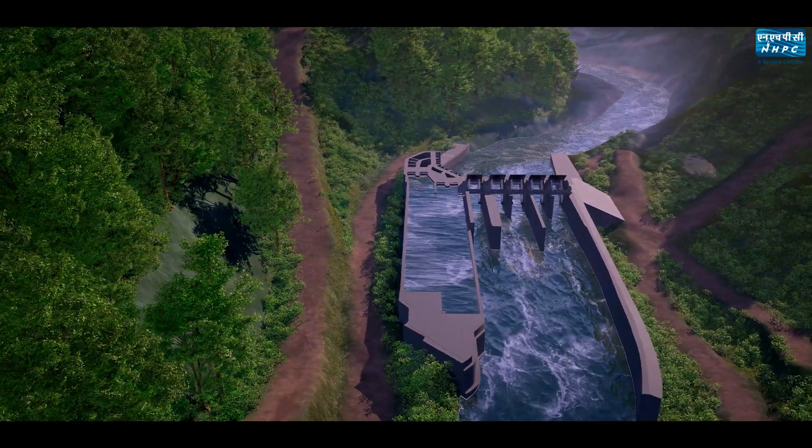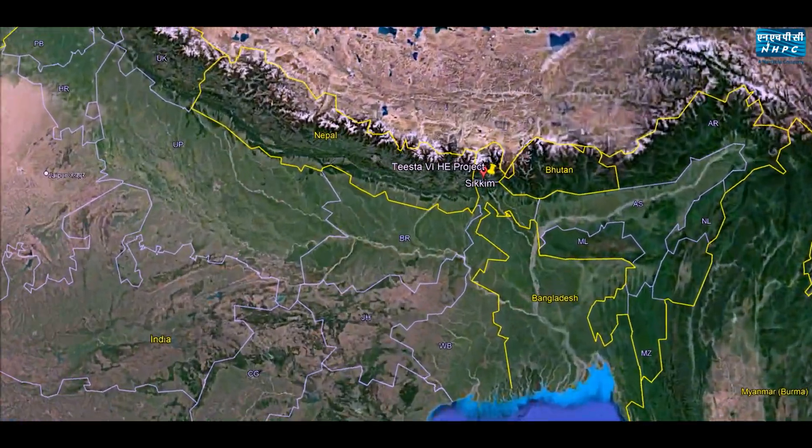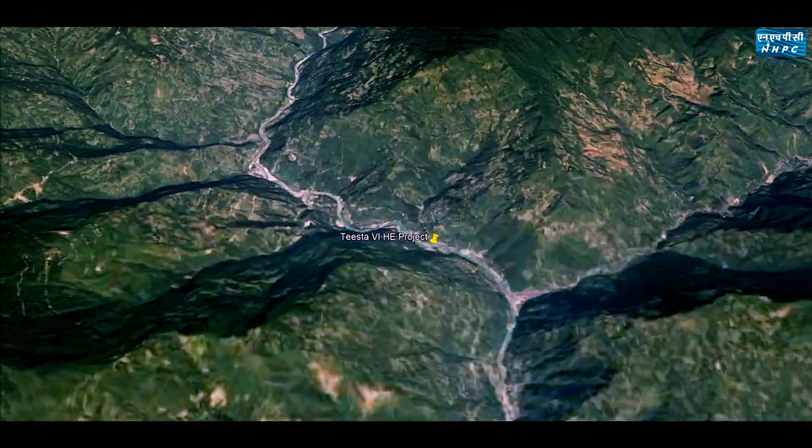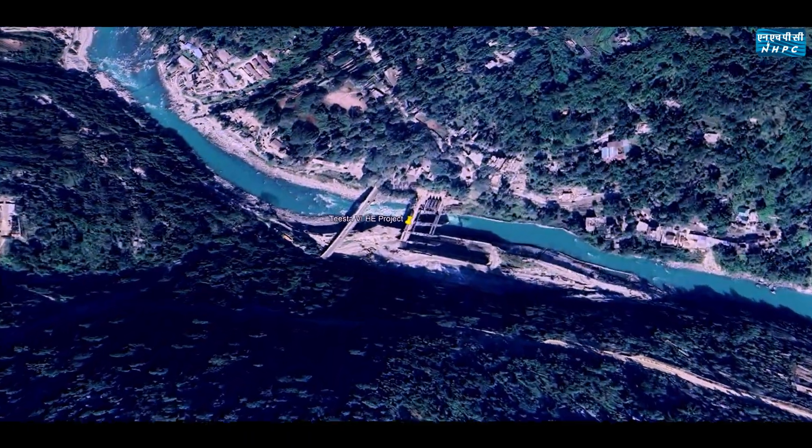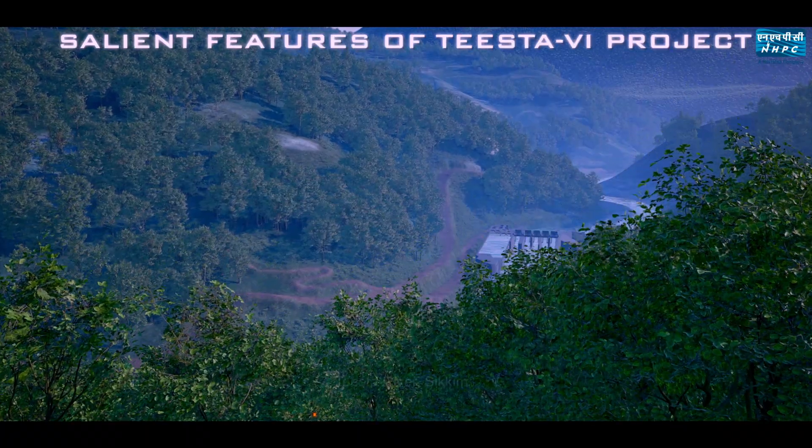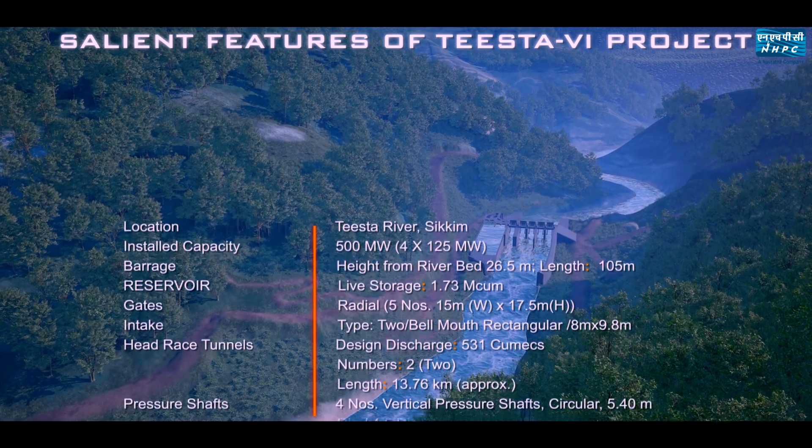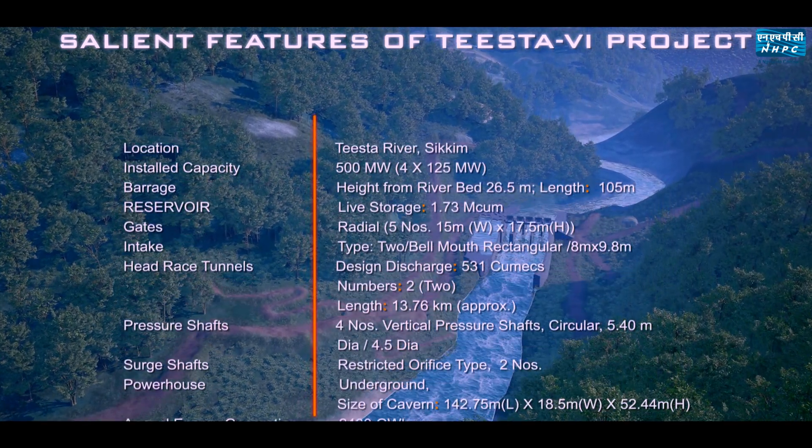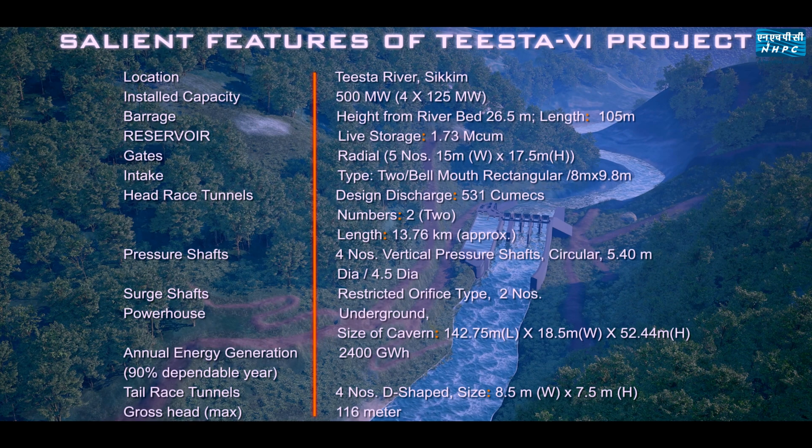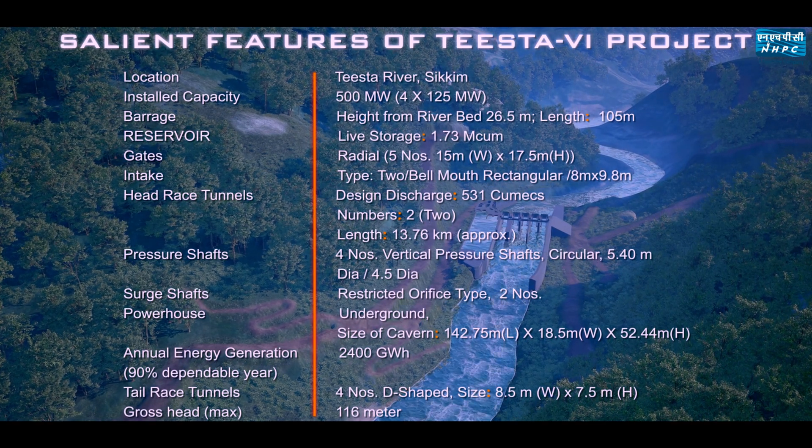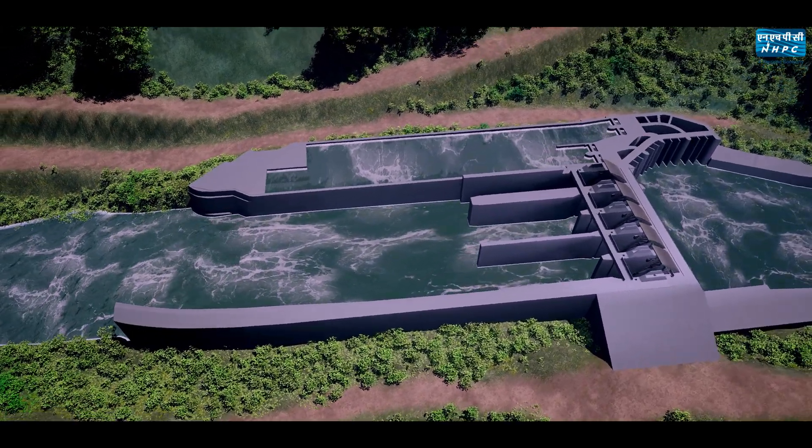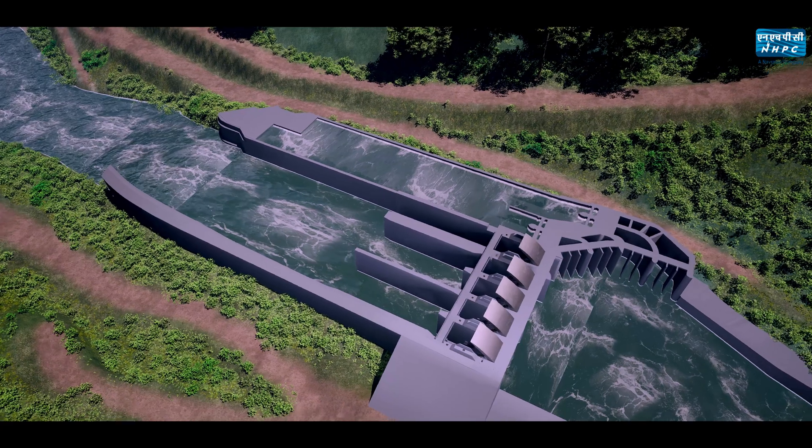The project is located in Sirvani village of Sikkim. The project has an installed capacity of 500 megawatts with four units of 125 megawatts each. Tista Stage 6 Hydroelectric Project is the last of the six projects in cascade development to harness the hydropower potential of Tista River in the state of Sikkim.